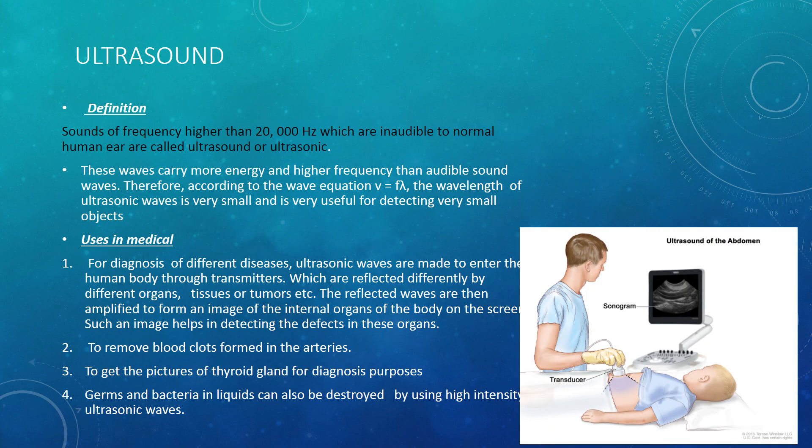The next topic is ultrasound. The basic definition of ultrasound is: sounds with frequency higher than 20,000 hertz, which are inaudible to the normal human ear, are called ultrasound or ultrasonic. The hearing range for the human ear is 20 hertz to 20,000 hertz. This means sounds less than 20 hertz or greater than 20,000 hertz are inaudible to us. So sound with frequency more than 20,000 hertz is inaudible to the human ear and is called ultrasound.